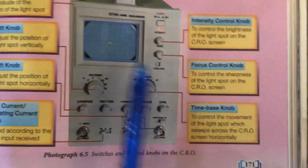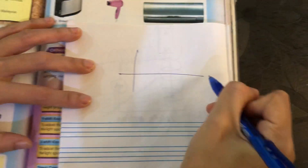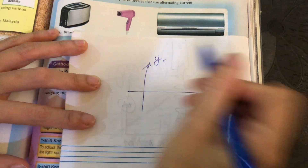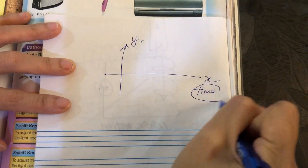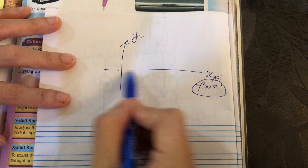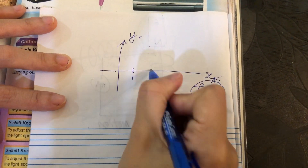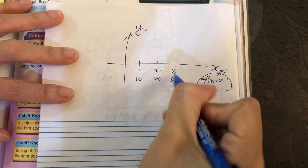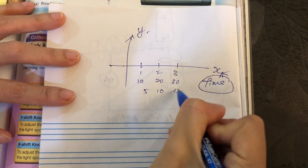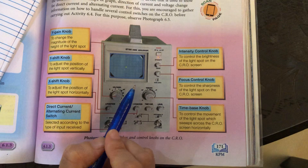The time base knob controls the x-axis. Just like a normal graph where you control the scale — for example, 1, 2, 3 or 10, 20, 30 — the time base knob controls the scale on the x-axis.